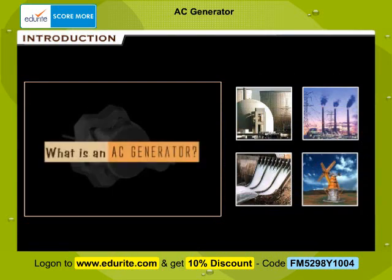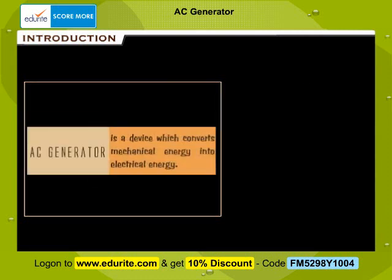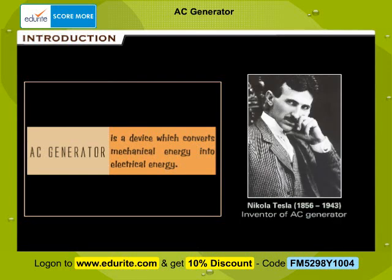What is an AC generator? An AC generator is a device which converts mechanical energy into electrical energy. AC generator was originally designed by Nikola Tesla.